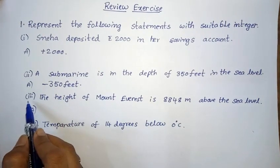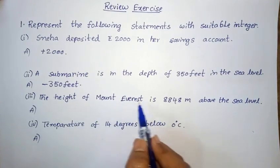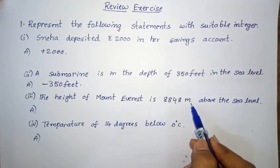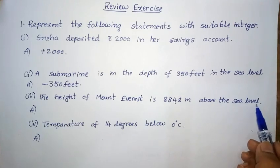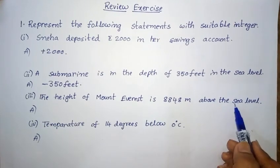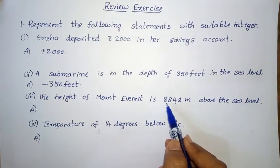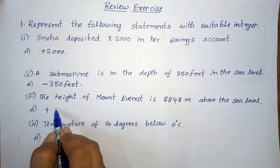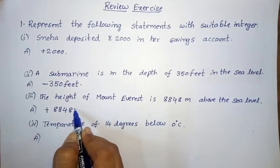1st Roman 3rd one: The height of Mount Everest is 8,848 meters above the sea level. Above the sea level represents plus, so the answer is plus 8,848 meters.